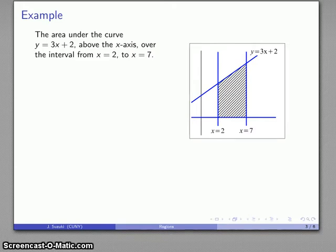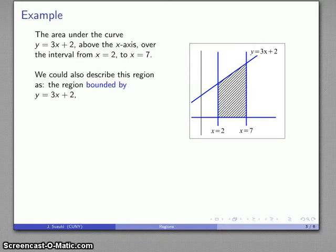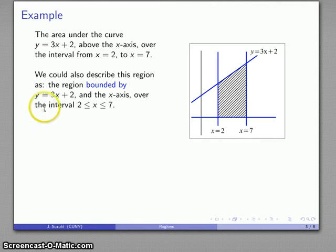That gives me a region whose area I can talk about. Now, there's some other ways I can express this. I might talk about this as the region bounded by y = 3x + 2 and the x-axis. That statement 'bounded by' says I'm not really going to commit myself to which of these two is the top and which is the bottom. Once we graph 3x + 2 and the x-axis, it's pretty clear which one is the top and which is the bottom. This interval from x = 2 to x = 7, I might just describe as the interval 2 ≤ x ≤ 7.